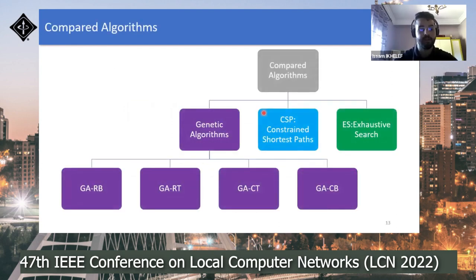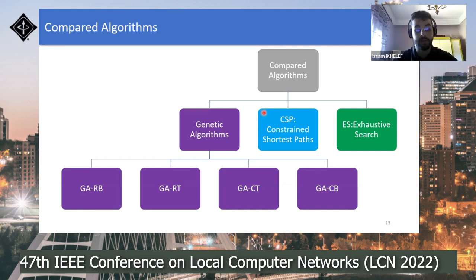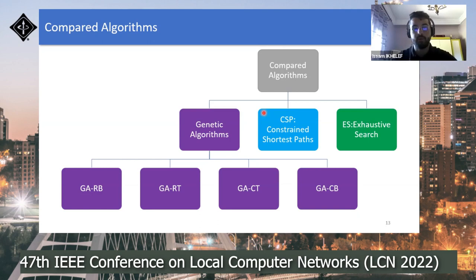We compared four genetic algorithms with CSP — the Constrained Shortest Path — between the source and the destination. With this approach, the shortest path of exactly x links verifying the constraint is determined and used to deduce the VNF placement and chaining. ES — Exhaustive Search — allows determination of the exact solution.